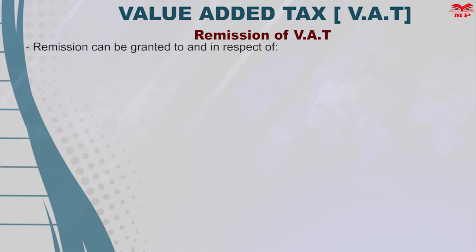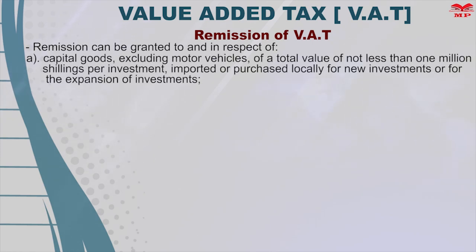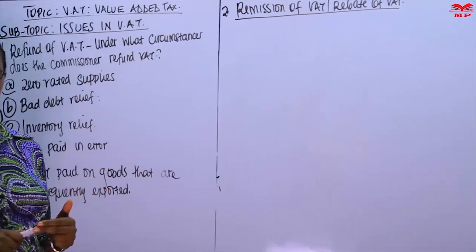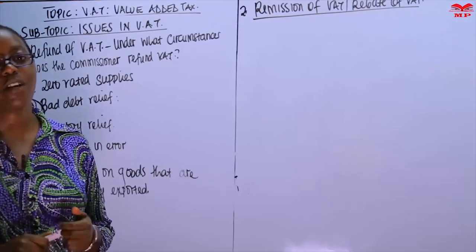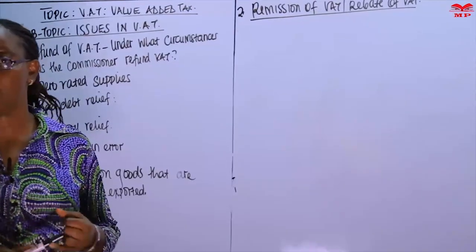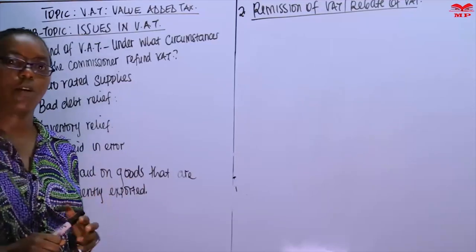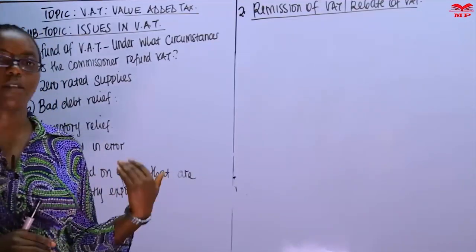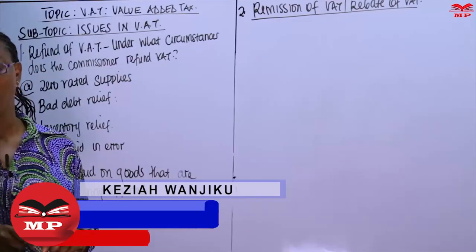Remission can be granted in respect of: A — capital goods, excluding motor vehicles, of a total value of not less than 1 million shillings per investment, imported or purchased locally for new investments or for the expansion of investments. This connects to fiscal policy objectives where tax plays a role in encouraging investments, both local and foreign. In order to encourage businesses to expand, the commissioner waives the VAT payable on the machinery and everything needed to expand.